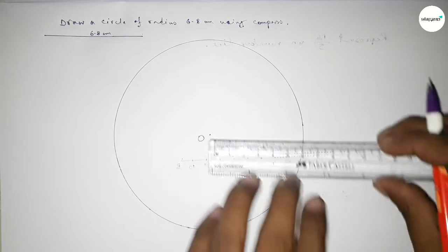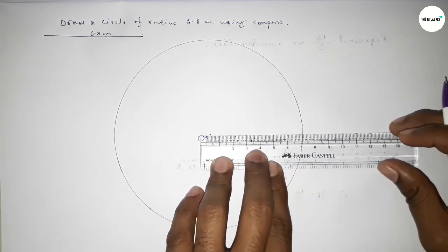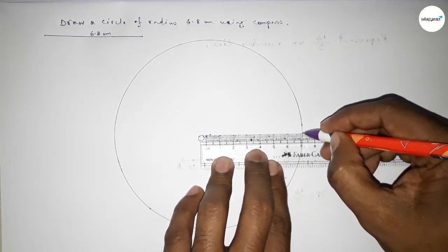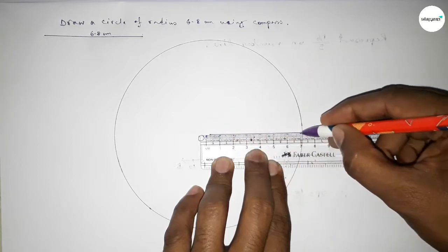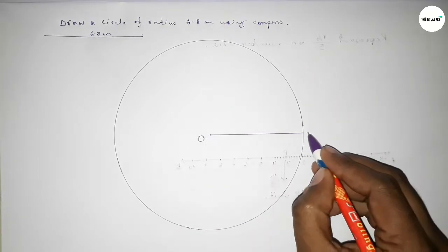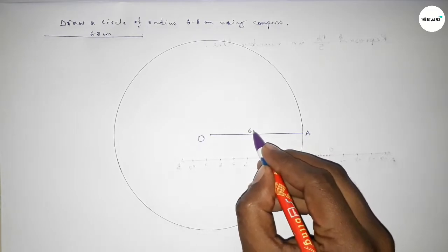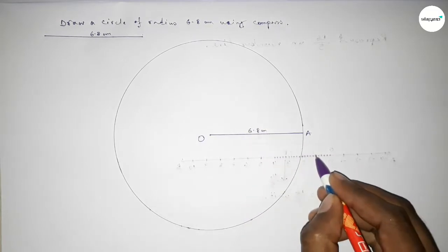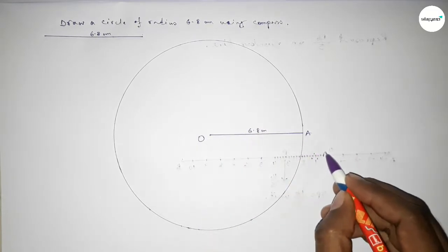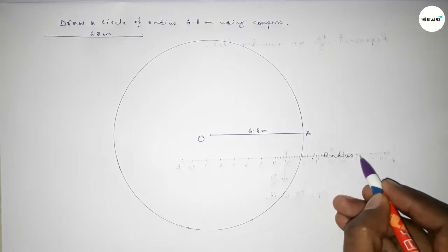Marking center O. Now joining this to get the radius of this circle. First joining this, and this is the radius of this circle. Taking point A here, so OA equals 6.8 centimeter. Therefore, radius OA equals 6.8 centimeter.